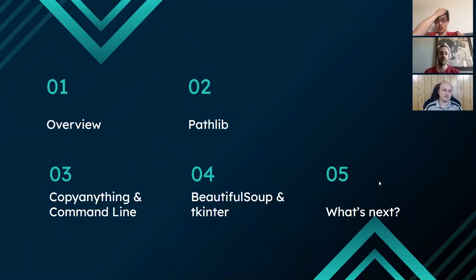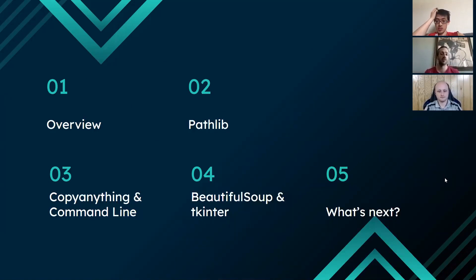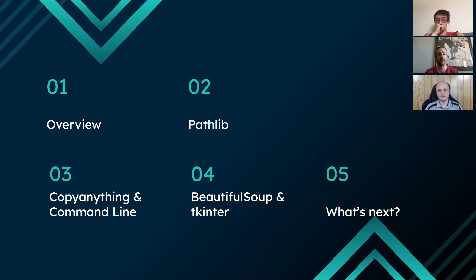First, I'm going to be talking about the overview of the script and what it does. It's a really simple script, so we're mostly going to be talking about the tools and useful things that we encountered along the way so that we can pass these on for people to use in the future. Then I'll hand it off to Will, who will talk about the pathlib function. Then I'll cover the copy anything function and how we implemented this script on the command line. And finally, Jimmy will cover the Beautiful Soup library and TKinter. Then we'll discuss what's next and what possible scripts or solutions you can come up with in the future.